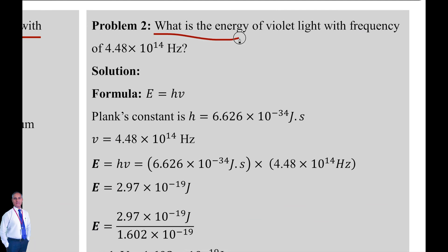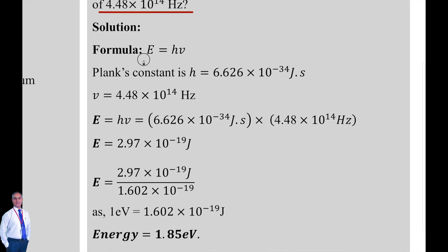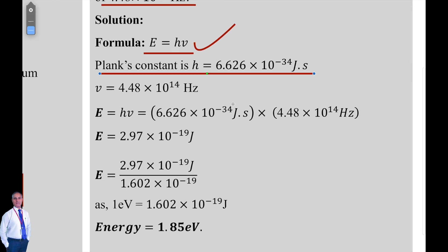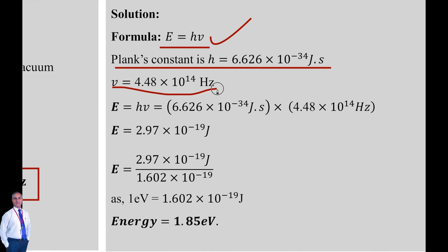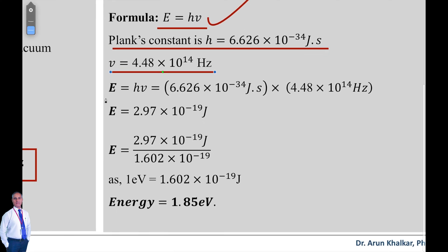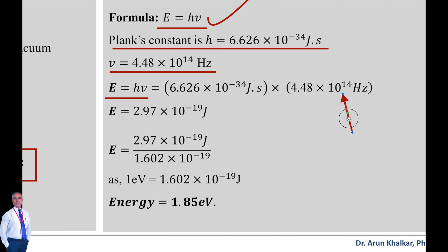Problem number two: What is the energy of violet light with frequency of 4.48 × 10¹⁴ hertz? The formula is E = hν, that is energy equals Planck's constant h into frequency. The value of Planck's constant is h = 6.626 × 10⁻³⁴ joule·second, and the frequency is given as 4.48 × 10¹⁴ hertz. So energy E = 6.626 × 10⁻³⁴ × 4.48 × 10¹⁴.